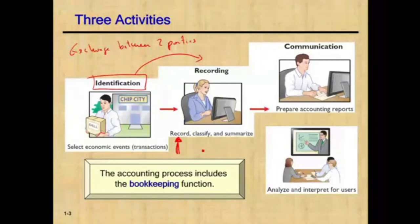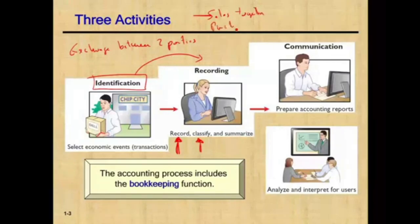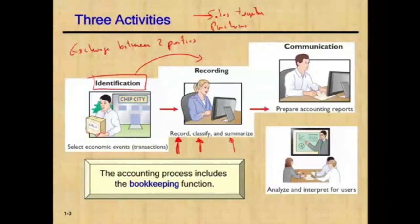Then we're going to classify the transaction — determine what type of transaction it is. Then we put all similar transactions together. For example, we put all the sales together and all the purchases together. We classify them and summarize them, because we're going to have many transactions and we want it to make sense. So we record, classify, and summarize.